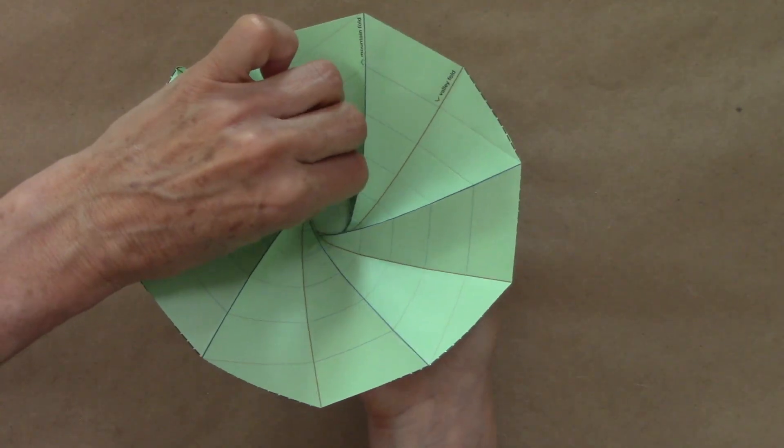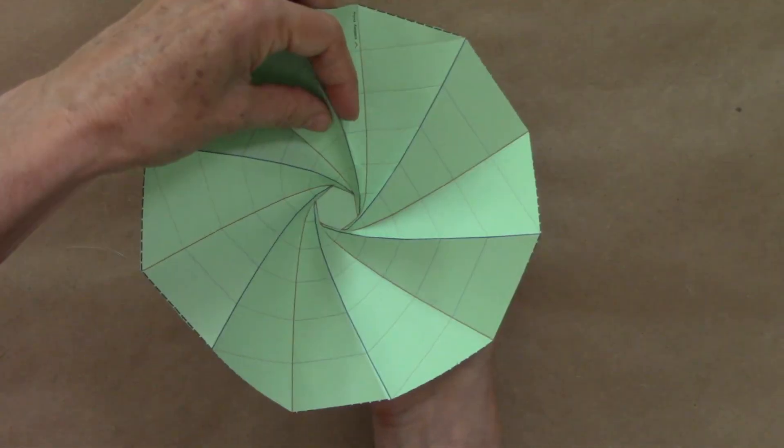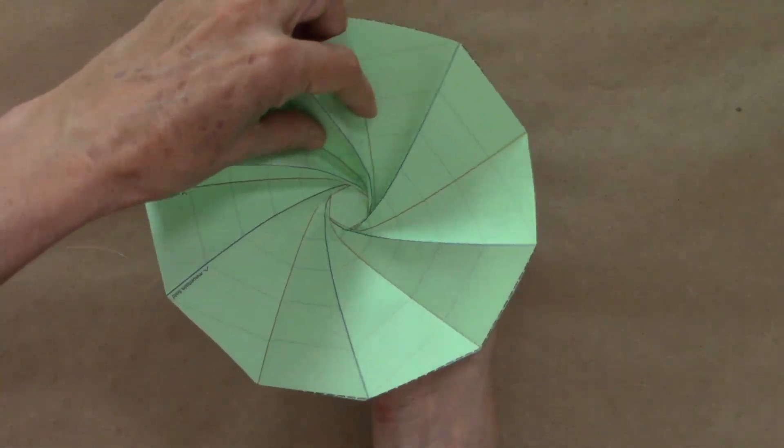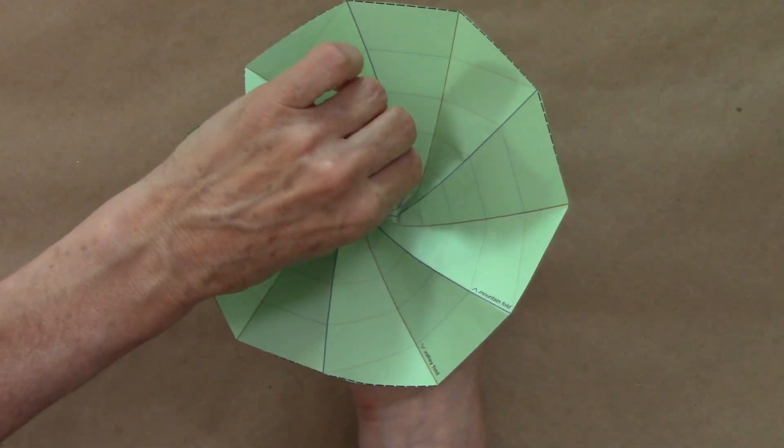Reinforce the mountain at the center and let go, and repeat. Reinforce, let go. We can see the rotating movement of the hexagon starting to happen. These are all existing folds. No new fold is created here.